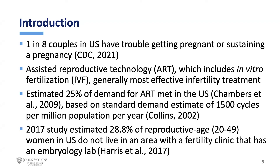There's an estimate of about 25% of demand for ART in the U.S. being met, based on international standards of utilization. That international standard is about 1,500 cycles per million population per year. When you do the math, we do about a quarter of what peer countries in Northwest Europe, Australia, and Israel are doing — those countries are doing about 75% more than we are per capita. A 2017 study estimated geographic access to care and found that about 30% of women don't even live in an area with a clinic. The motivation for this work was the concept that if you could improve geographic access to care, you can improve actual utilization. There are a number of barriers to care, but the focus of this work is the geographic component.